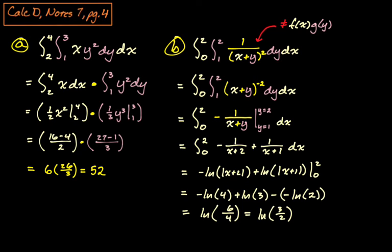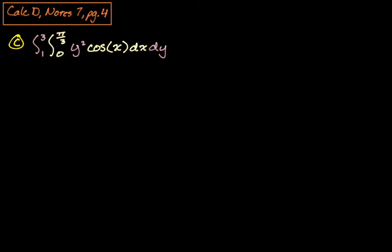All right, we're going to do one more problem and then we'll be done with page four of the notes. So the problem looks like the integral from one to three, integral from zero to π/3, y squared cosine of x dx dy. All right, so this one actually is a product of a function of x and a function of y. So the function of x is cosine, function of y is y squared.